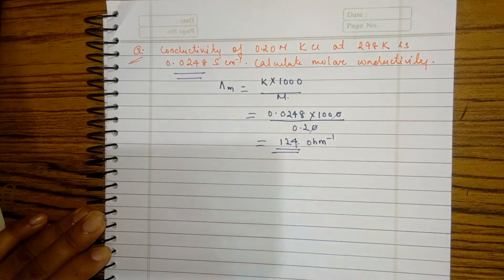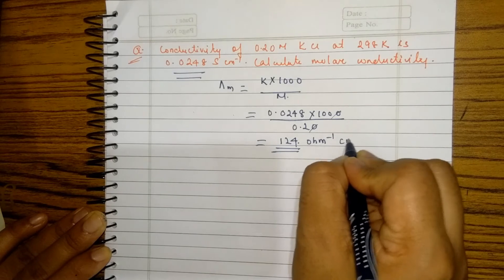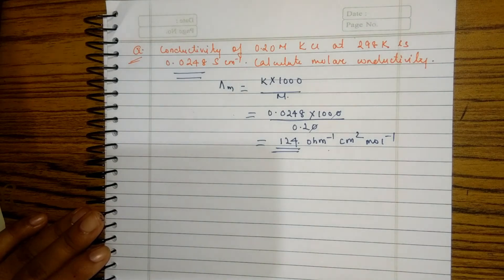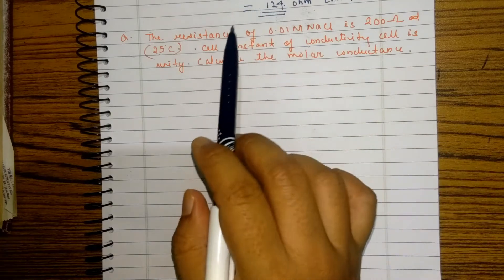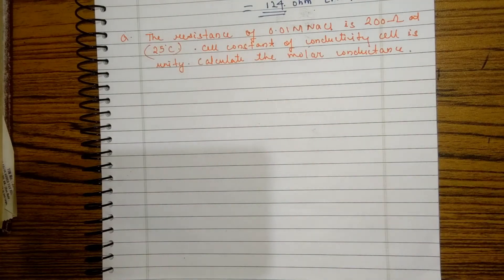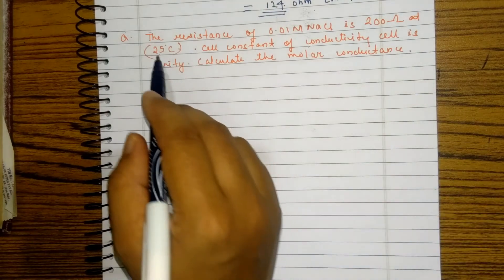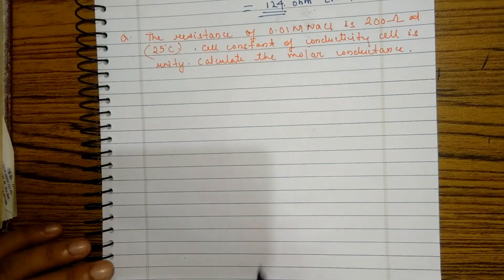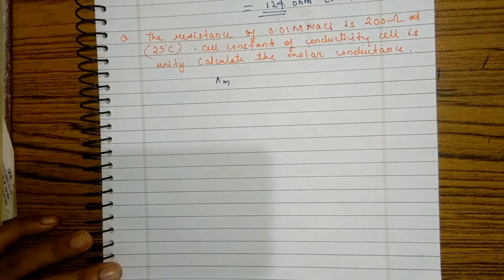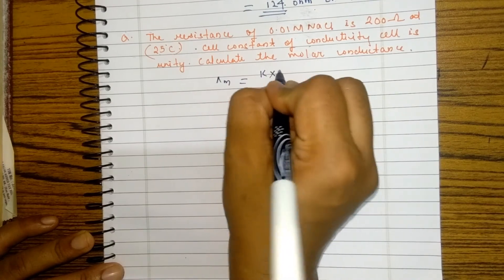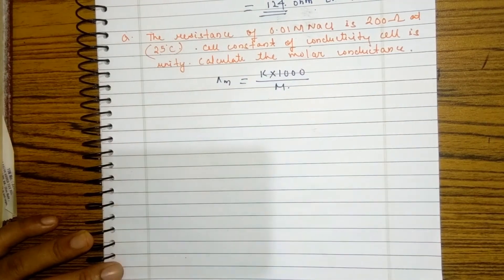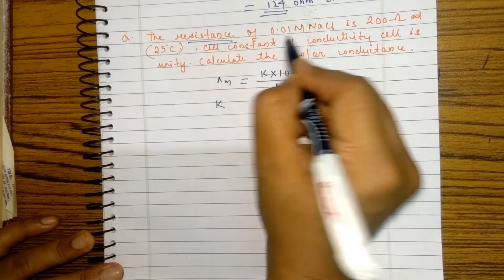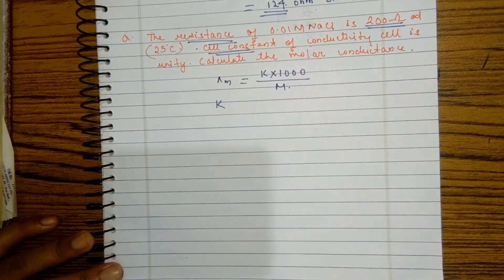The unit for molar conductance is ohm inverse centimeter square mole inverse. Moving on to our second question: the resistance of 0.01 molar NaCl solution is given as 200 ohm, and the cell constant of the conductivity cell is unity. We have to calculate the molar conductance. The formula is kappa m equals kappa into 1000 by M, but here the value for kappa is not given — instead, the resistance is given as 200 ohms and the cell constant is given.